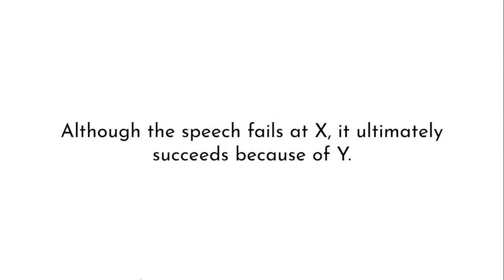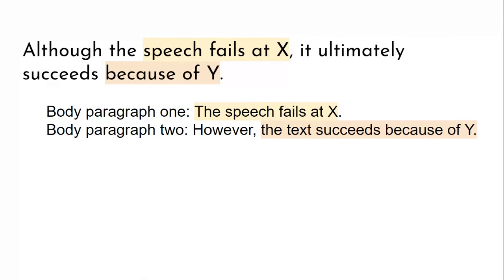What if you had a thesis statement like: 'Although the speech fails at X, it ultimately succeeds because of Y'? What do you need to prove here? First, prove that the speech fails at X, then prove that it succeeds because of Y. Devote part of your paper to one, and part to the other. Note that if you're doing contrasting ideas, you'll absolutely need a strong transition to let your reader know you've switched from talking about one thing and moved on to another.